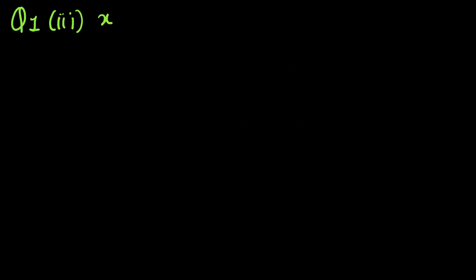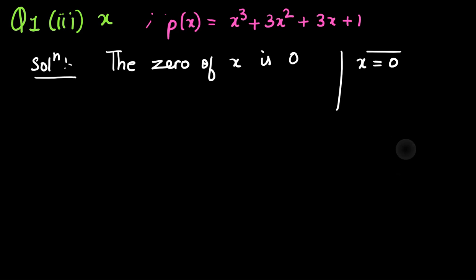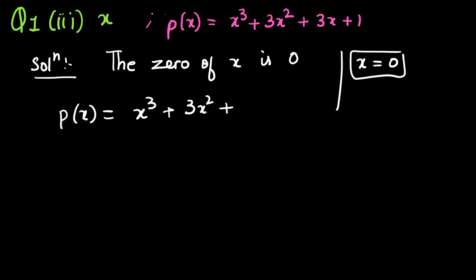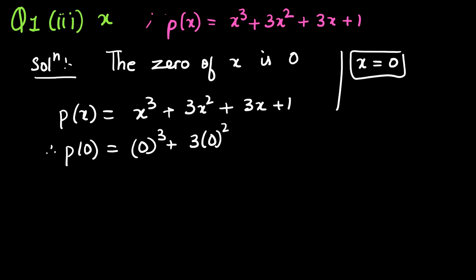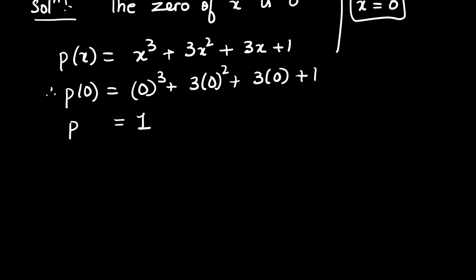The third question is x. We equate x with zero, so x = 0. The zero of x is zero. p(x) = x³ + 3x² + 3x + 1, therefore p(0) = 0³ + 3(0)² + 3(0) + 1. The answer is one. p(0) = 1, so the required remainder is one.